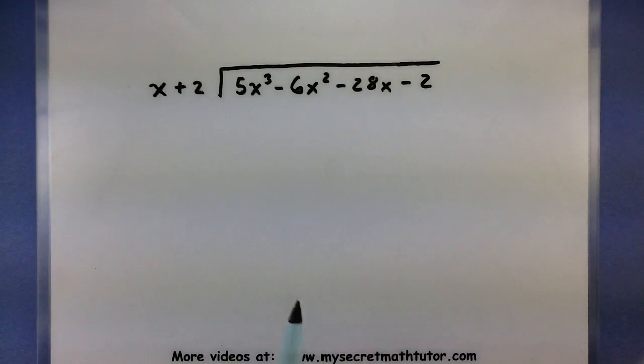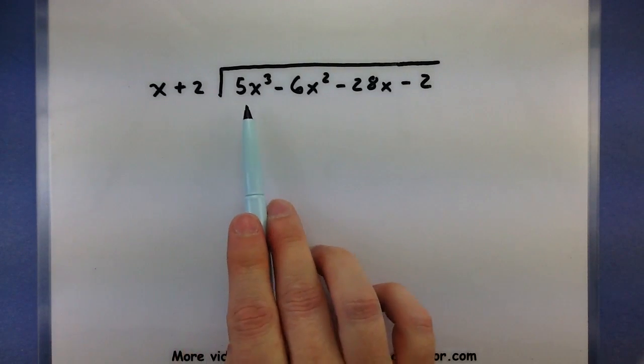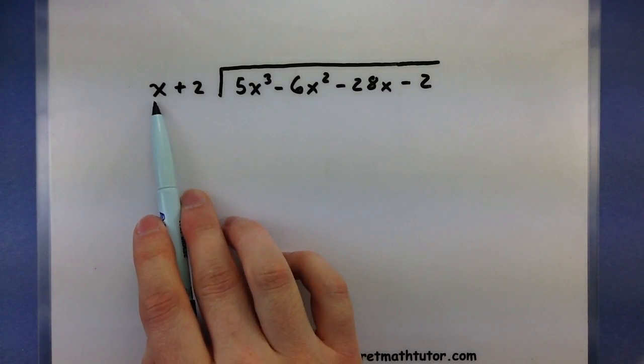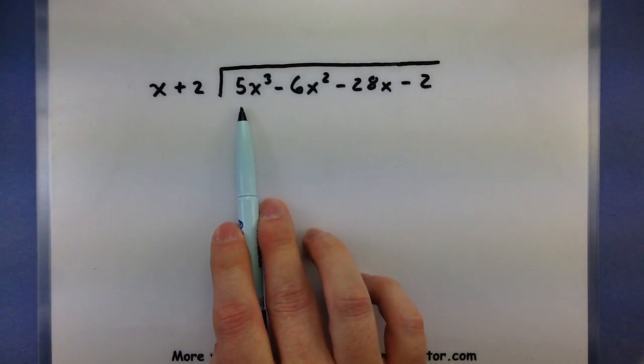Now what we're going to do is basically take a look at the very first two terms of each of these polynomials. I want to think to myself what do I have to multiply x by in order to get a 5x³?